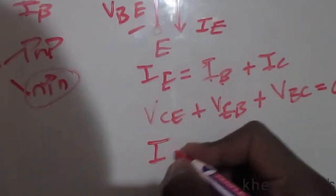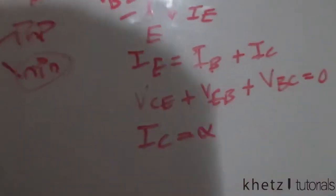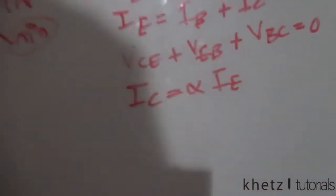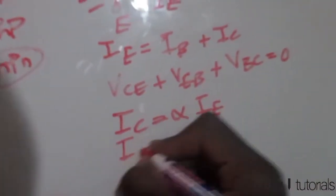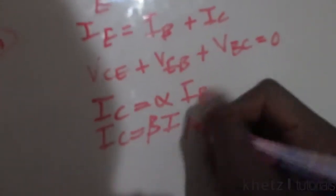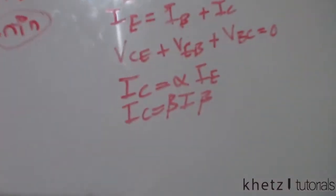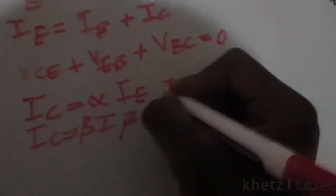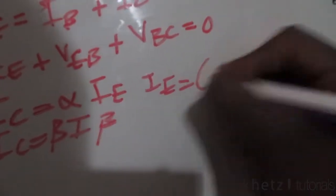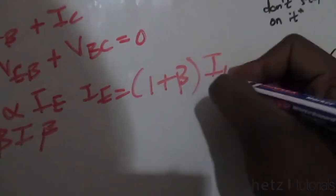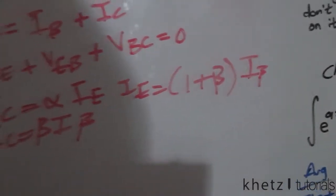Another useful equation is ic equals alpha times ie. Also, ic equals beta times i_b. And finally, ie equals (1 + beta) times i_beta. Having all of these equations, we can now solve the problem.